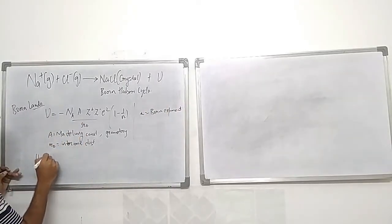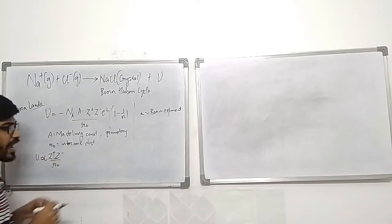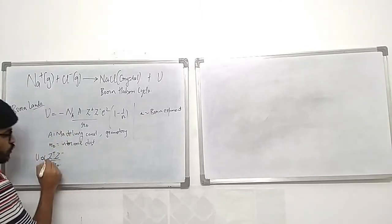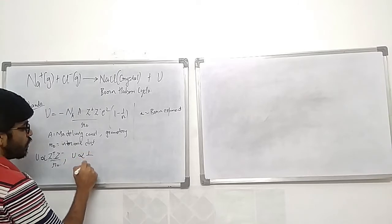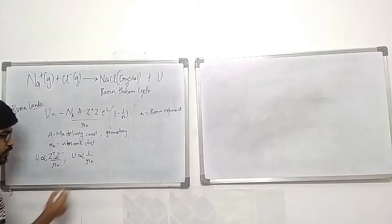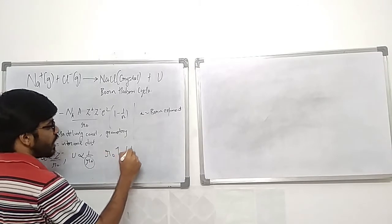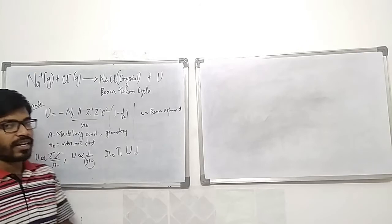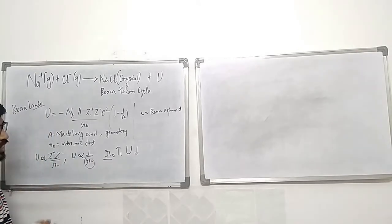From the Born-Landé equation, U is directly proportional to Z⁺Z⁻ / R₀. If we take the same oxidation state for different metal ions, Z⁺ and Z⁻ become constant, so U is inversely proportional to interionic distance. That means if interionic distance increases, lattice energy decreases. To understand the trend in lattice energy, let's first look at the trend in interionic distance.